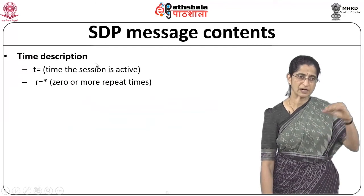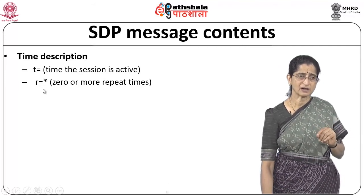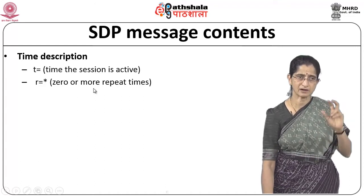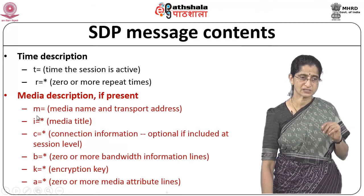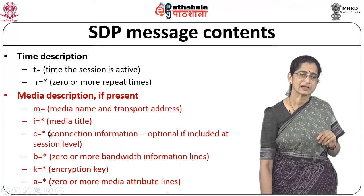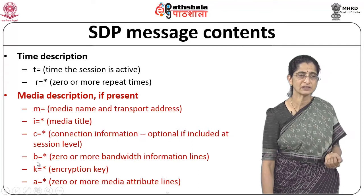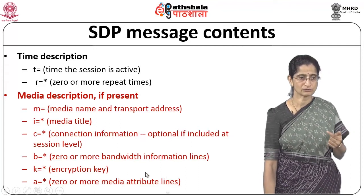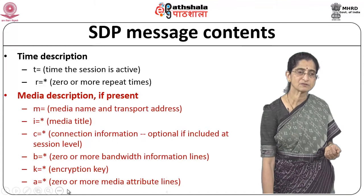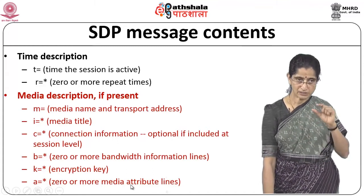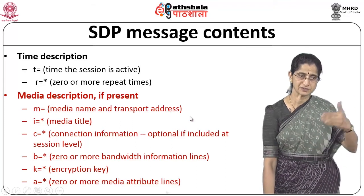Looking at the time description part of the SDP message: T gives you the time the session is active, and R gives zero or more repeat times, providing the time description. For the media description, M gives the name of the media and the transport address, followed by the media title, C for connection information (optional if already at session level), B for zero or more bandwidth information lines, K for an encryption key, and A for zero or more media attribute lines.